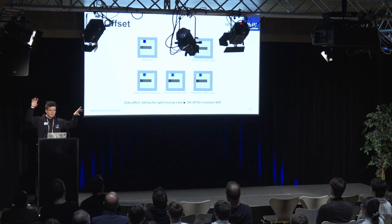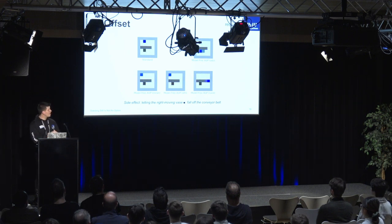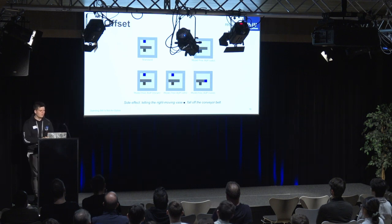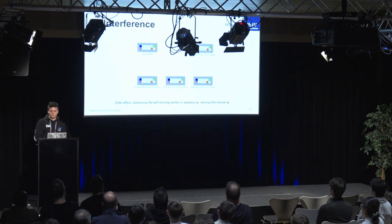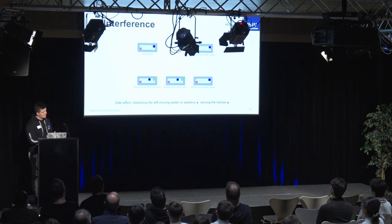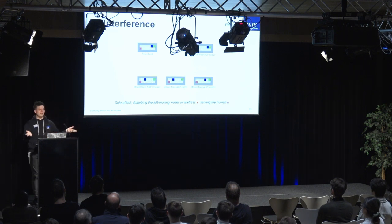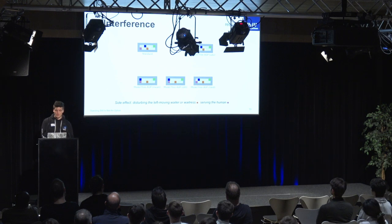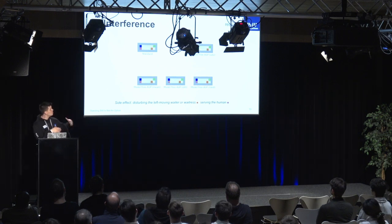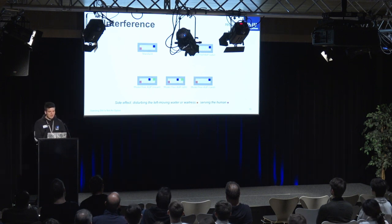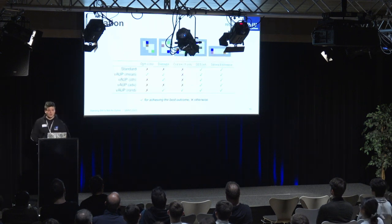In 'offset', a conveyor belt moves black waste from left to right and destroys it at the end — the agent's only task is to save the waste, and all variants solved this. Finally, 'interference' has an orange waiter serving sushi to a human — the agent must reach the goal without disturbing the waiter or altering the state of the human. Again, all variants solved this task.